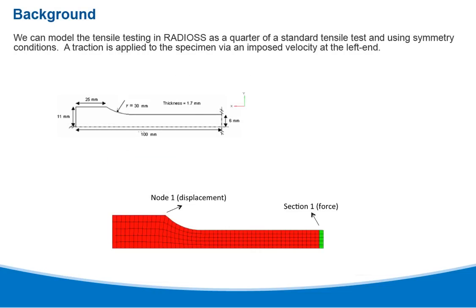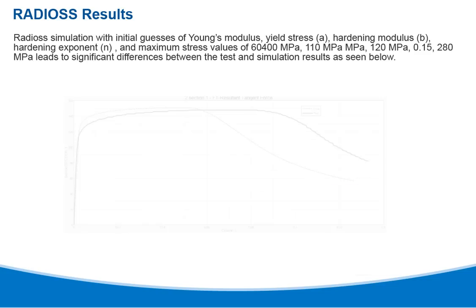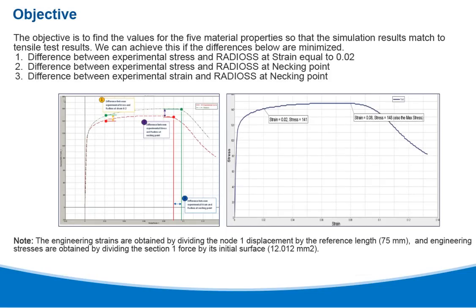We can model the tensile testing in Radioss as a quarter of a standard tensile test and use symmetry conditions. A traction is applied to the specimen via an imposed velocity at the left end. A Radioss simulation was run with initial guesses for the five material properties. As seen in the graph, there are significant differences between the test and simulation results. The objective is to find the values for the five material properties so that the simulation results match the tensile test results. This can be achieved if the differences stated can be minimized.